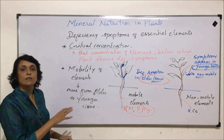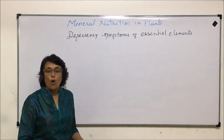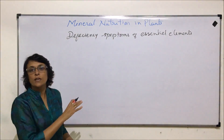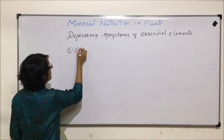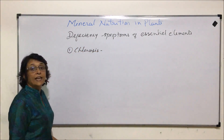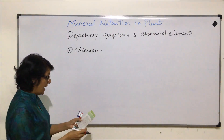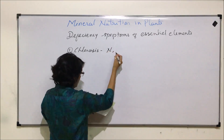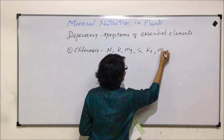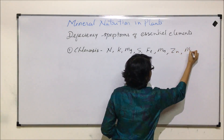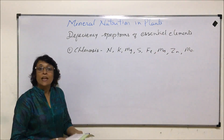Now we will discuss certain general deficiency symptoms that appear across multiple element deficiencies. The first is chlorosis — the technical term for loss of chlorophyll pigment. Chlorosis is caused by deficiency of nitrogen, potassium, magnesium, sulfur, iron, manganese, zinc, and molybdenum. Deficiency of any of these elements results in this symptom.